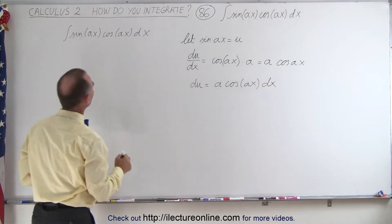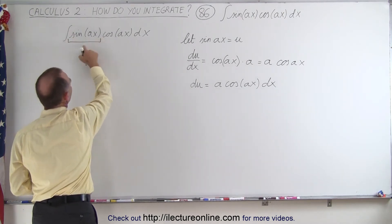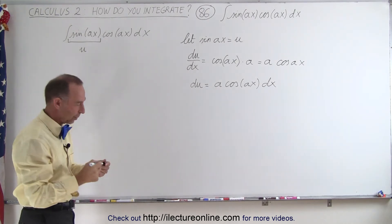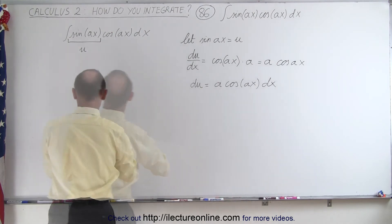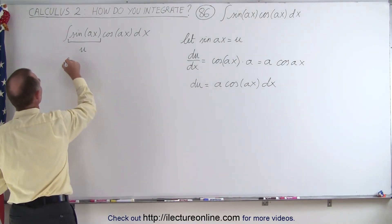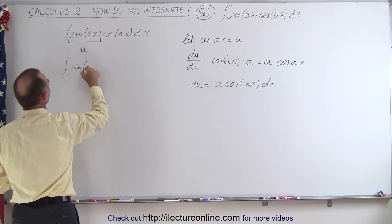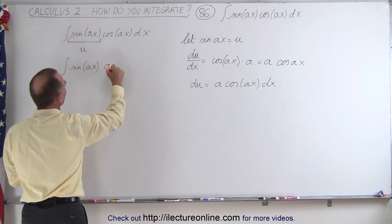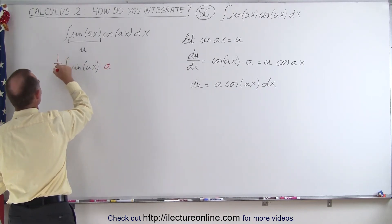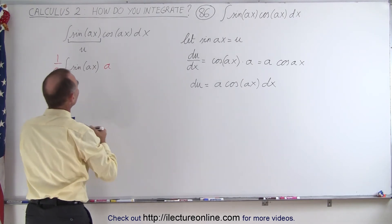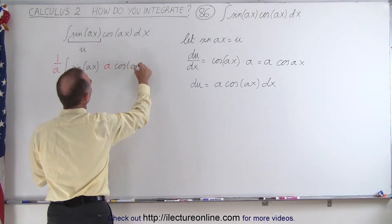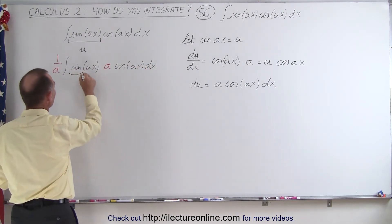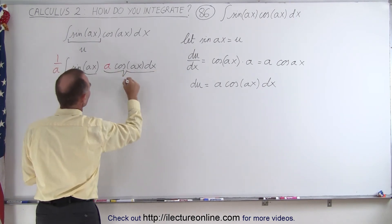So when we look at that, we have the sine of Ax, which will be equal to u, and here we have the cosine of Ax dx, but we're missing an A. So what we need to do is add an A — I'll put it in red so you can see — and of course when we multiply by A, we also have to divide by A, giving us 1 over A. Then over here we have the cosine of Ax dx, and so now you can see that this portion is the u and this portion here is the du.